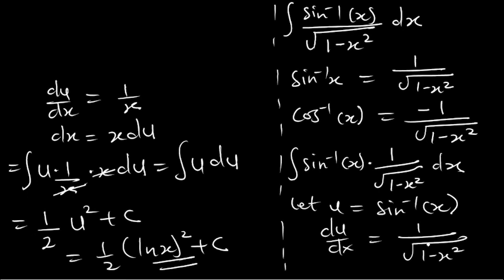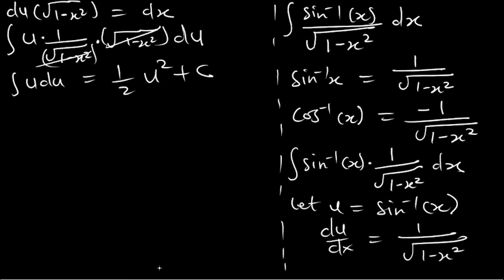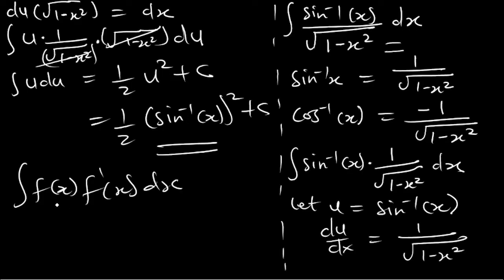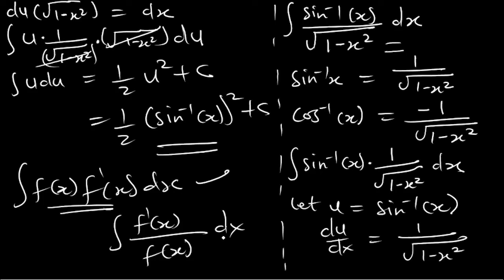Once we have that substitution, everything follows easily. The result is ½u² + c, and substituting back u = sin⁻¹(x), the answer is ½(sin⁻¹x)² + c. So always check if your integral obeys the principle f(x) multiplying its derivative dx — that's the way to go. We've now tackled this and know how to handle f'(x) over its original function as well. Thank you for watching this episode.